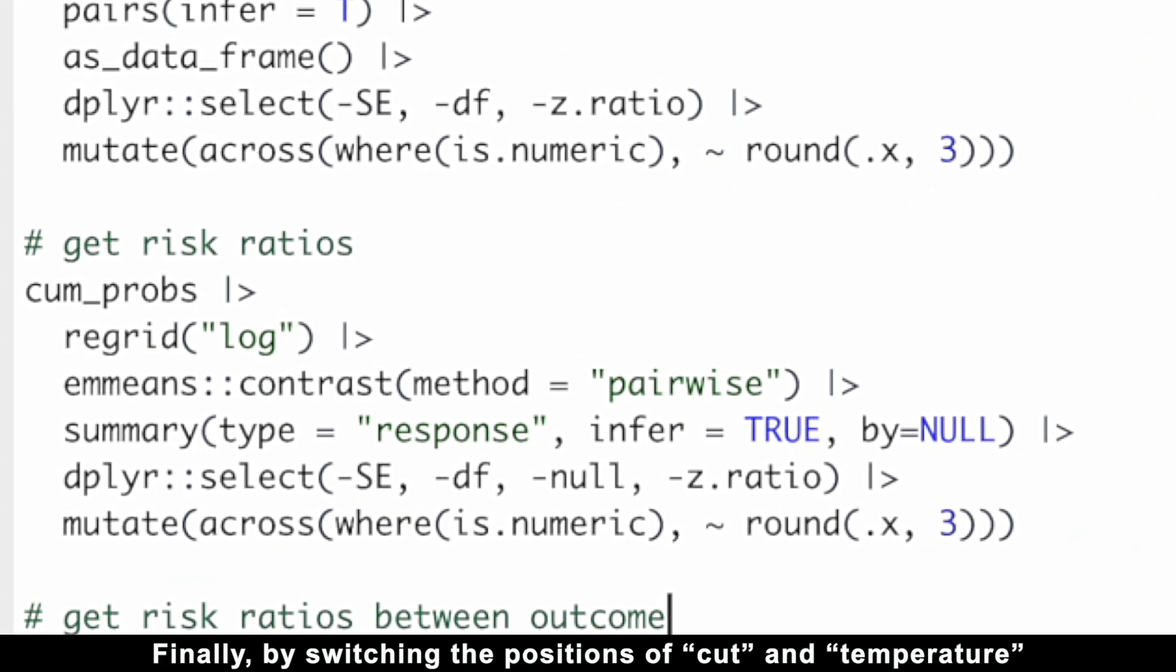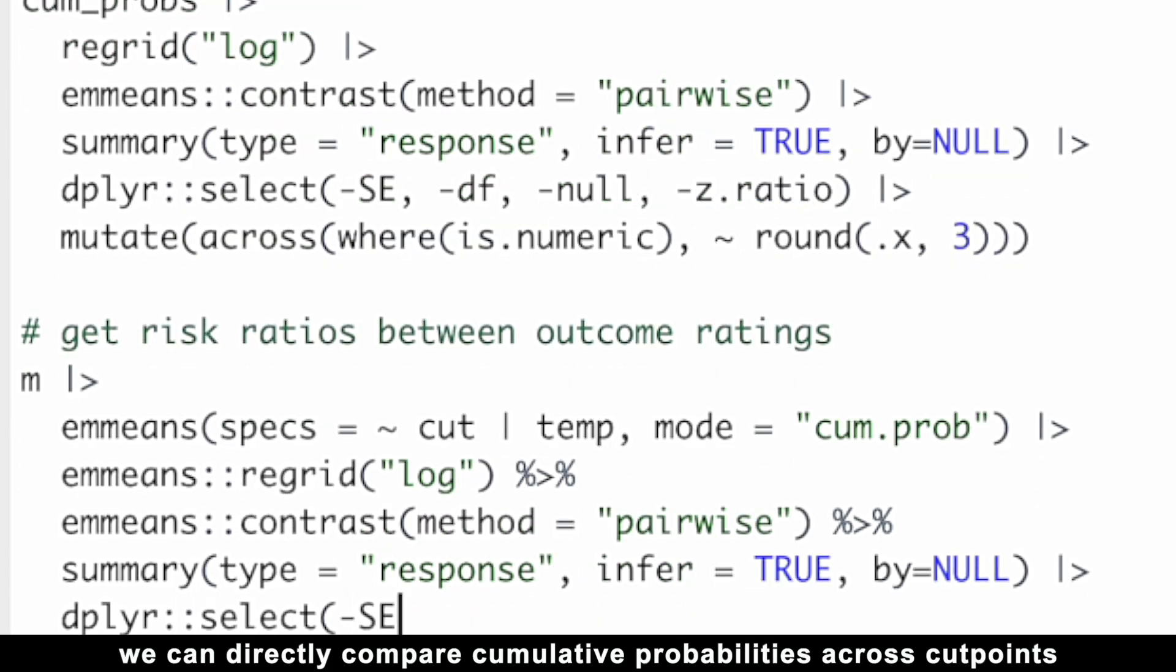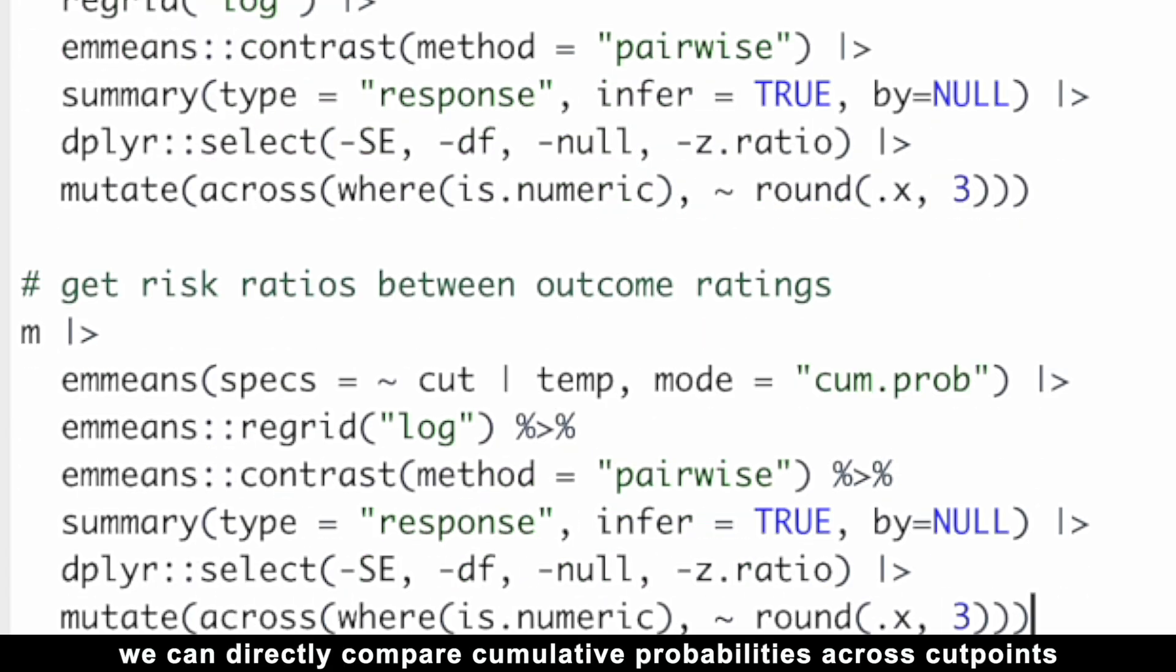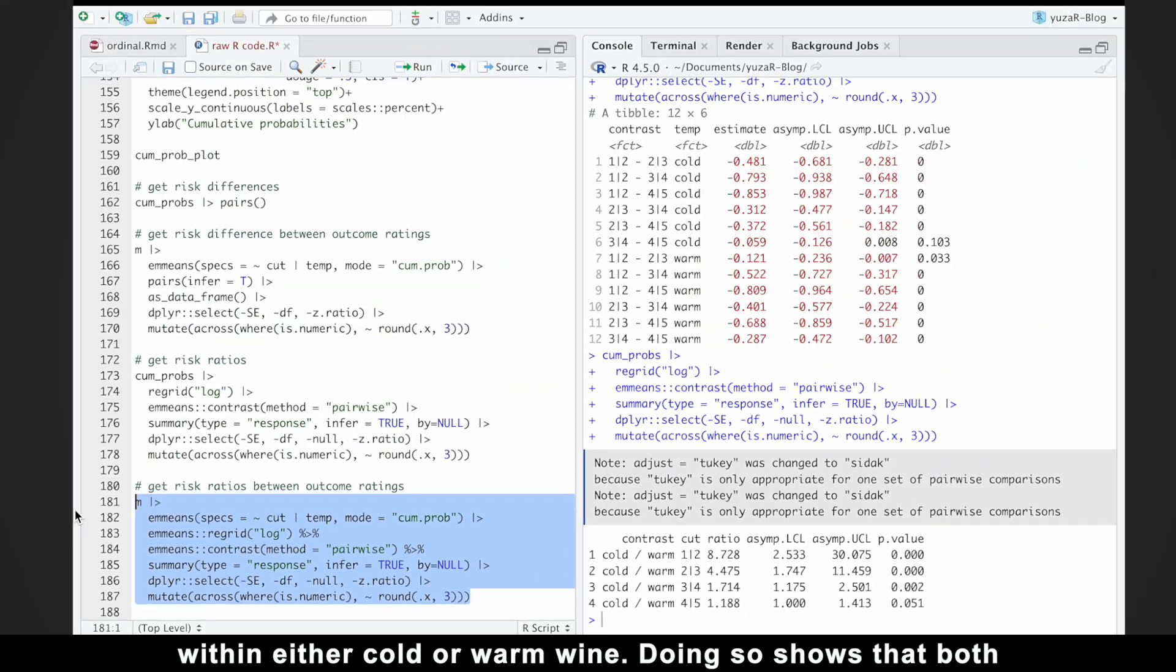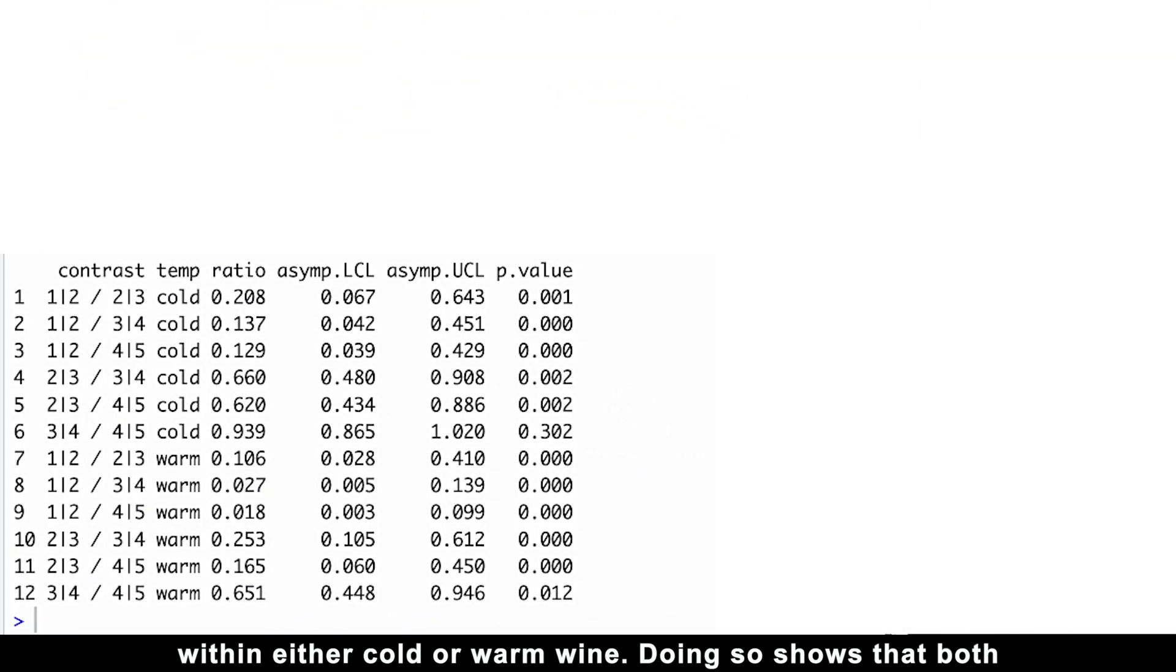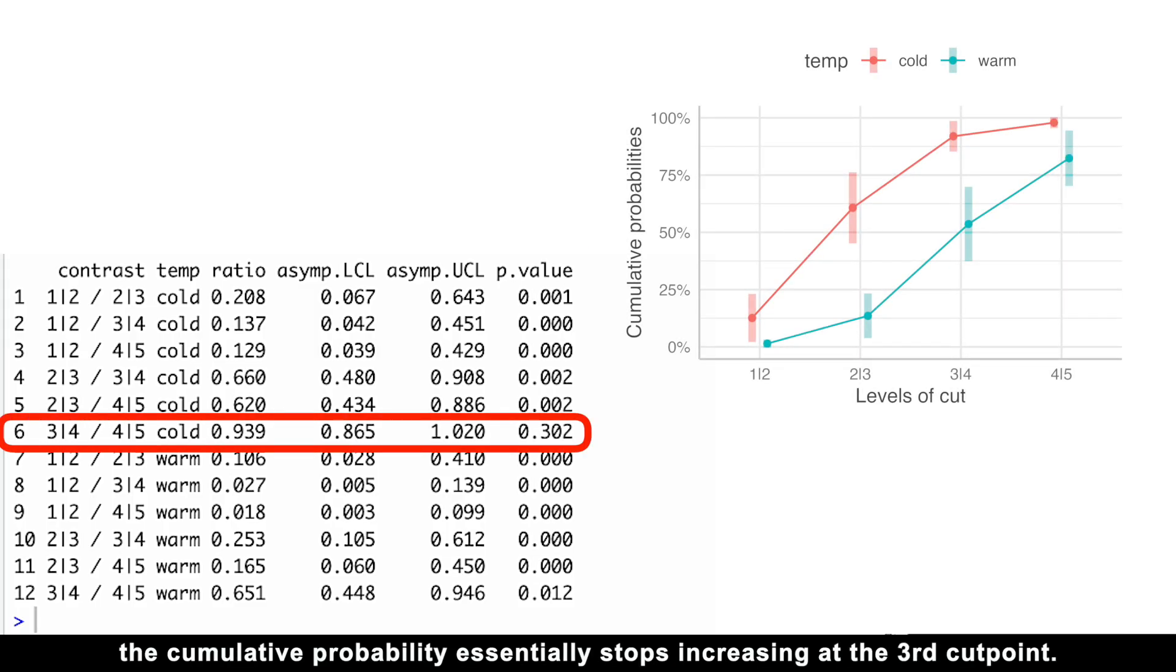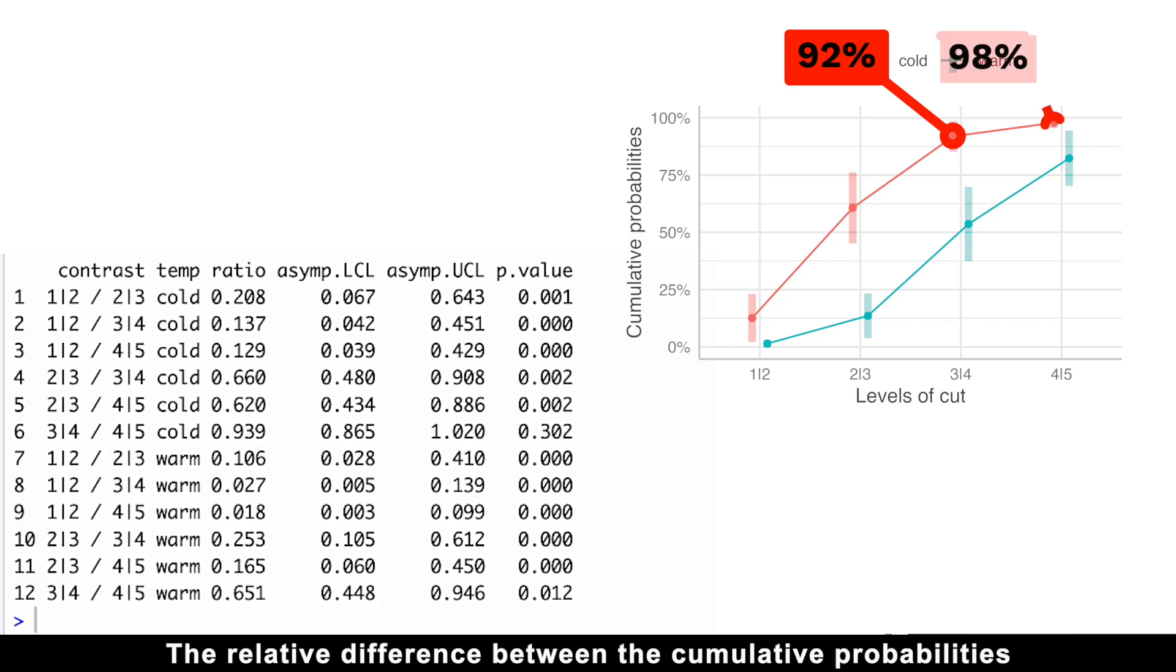Finally, by switching the positions of cut and temperature in our emmeans code, we can directly compare cumulative probabilities across cut points within either cold or warm wine. Doing so shows that both absolute and relative differences tell the same story. For cold wine, the cumulative probability essentially stops increasing at the third cut point. The relative difference between the cumulative probabilities of 92 and 98 is not statistically significant.